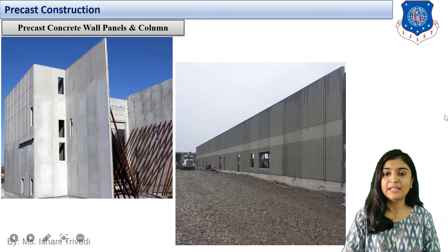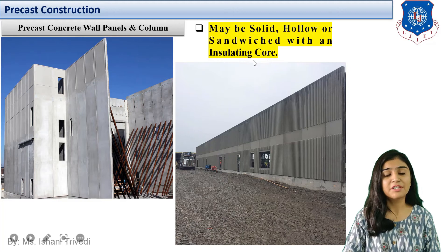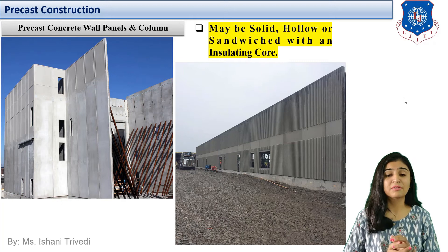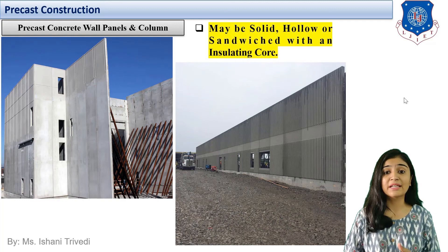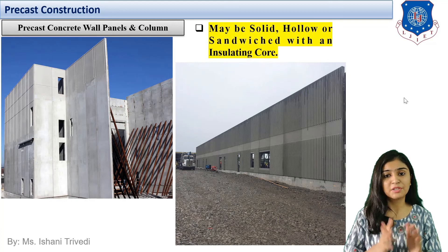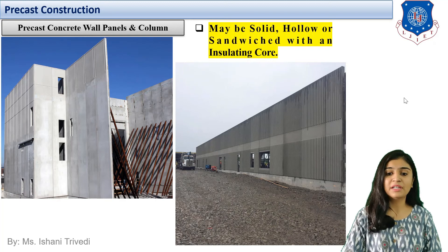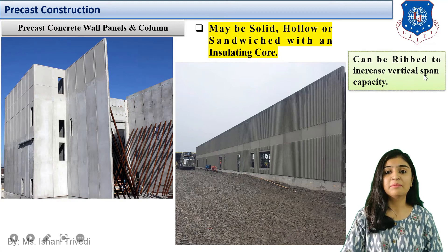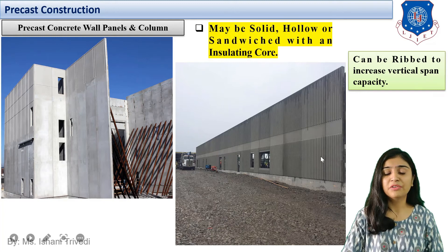Wall panels can be solid, hollow, or sandwiched with an insulating core. An insulating core is used when thermal insulation, sound insulation, water resistance, or any other type of barrier is needed. The insulating material is sandwiched between two panels. Panels can also be ribbed — with projected portions — to increase the vertical span capacity.